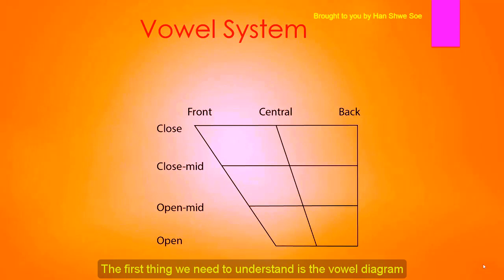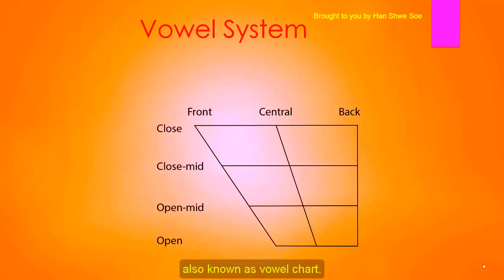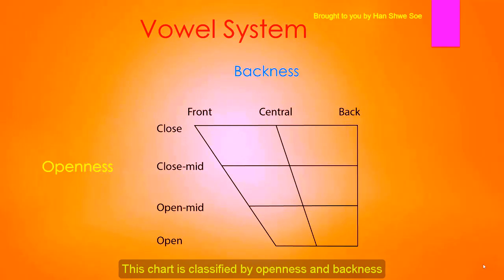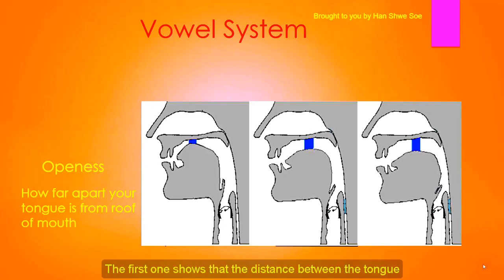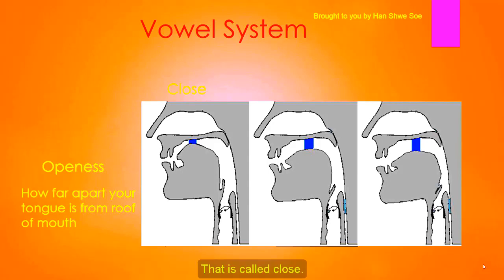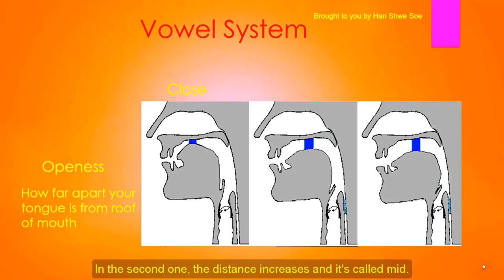The first thing we need to understand is the vowel diagram, also known as a vowel chart. This chart is classified by openness and backness. The vertical column shows the openness — that means how far apart your tongue is from the roof of your mouth. The first position, where the distance is narrow, is called closed; the middle distance is called mid; and the farthest distance is called open.